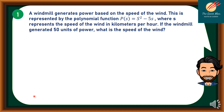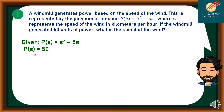In order to solve this problem, we will identify the given. The given is p(s) = s² − 5s, and p(s) = 50. Now that we know our given, we would like to determine what we are looking for. We want to find s when p(s) = 50.